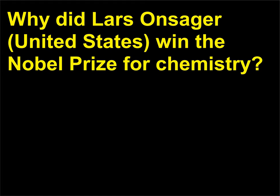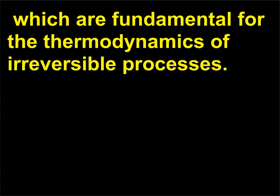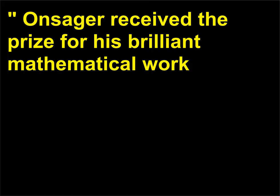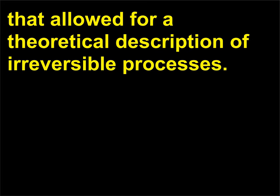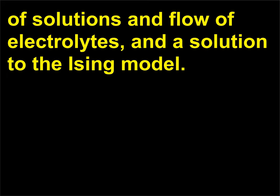For the discovery of the reciprocal relations bearing his name, which are fundamental for the thermodynamics of irreversible processes. Onsager received the prize for his brilliant mathematical work that allowed for a theoretical description of irreversible processes. He additionally made a large number of other contributions to physics and chemistry during his career, including developments surrounding the conductivity of solutions and flow of electrolytes, and a solution to the Ising model.